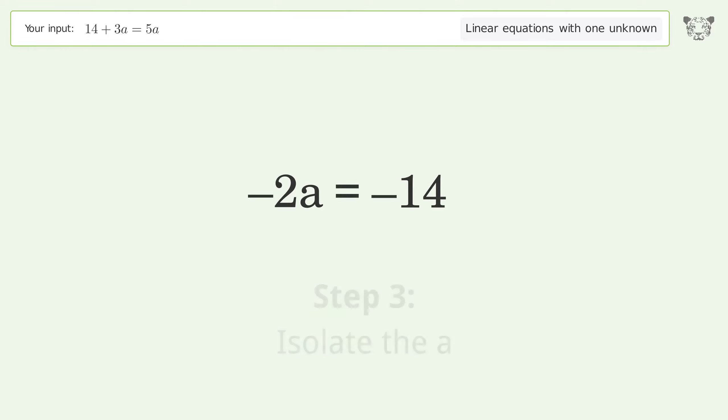Isolate the A. Divide both sides by negative 2. Cancel out the negatives.